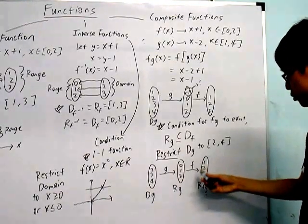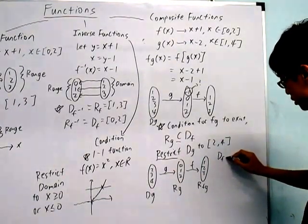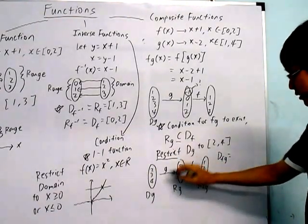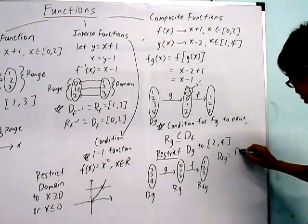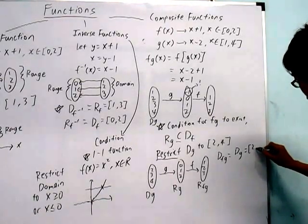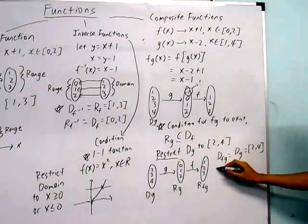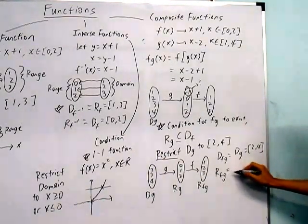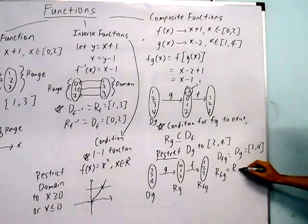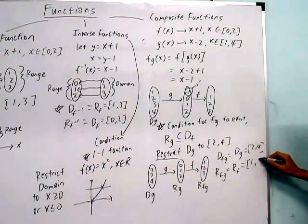From here, you can know that the domain of fg is the same as the domain of G, which in this example equals [2, 4]. And the range of fg is the same as the range of F, which in this example is [1, 3].